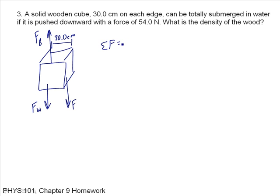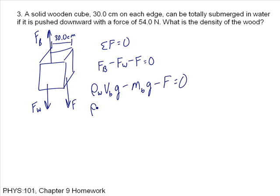So the sum of the forces is equal to zero because the block is not moving. That is FB, the buoyant force, minus FW minus F is equal to zero. The buoyant force is equal to the density of the water times the volume of the block times the acceleration due to gravity. This is the mass of the block times G, and then F is given, and that's equal to zero. Now, further, I don't know the mass of the block right off. So the density of the water, the volume of the block, G. The mass of the block is equal to the density of the block times the volume of the block times G minus F is equal to zero. And then I solve this for the density of the block because that's really what I want to know.